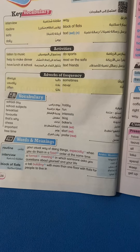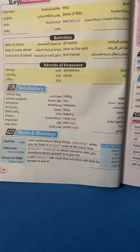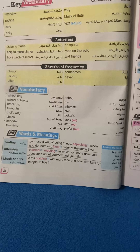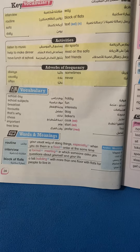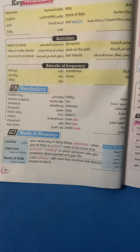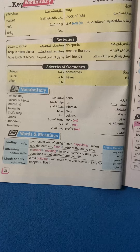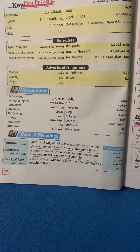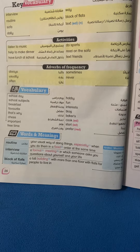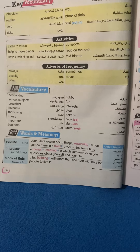Block of flats — a tall building — مبنى طويل — with more than one floor — في أكتر من دور أو طابق — with flats for people to live in — كل دور بيبقى فيه شقة أو أكتر بيعيش فيها السكان.